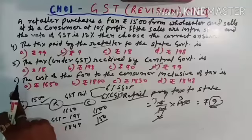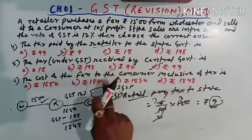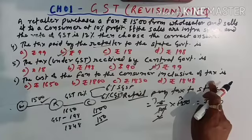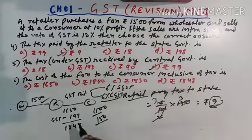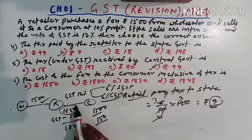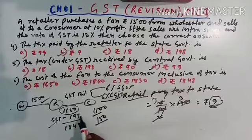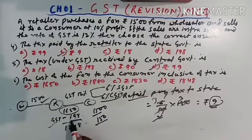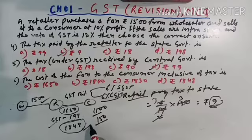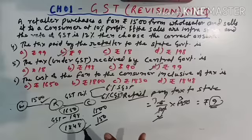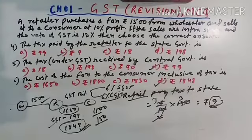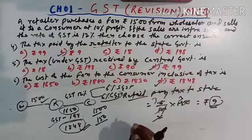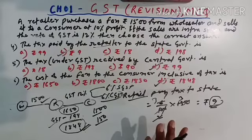Now the next question number six, the cost of fan to the consumer inclusive tax, that means for what amount the consumer is purchasing the fan. So total cost of fan was Rs. 1650 and the total GST was 198, when you add these two, you will get 1848, this is the amount, the actual amount, which a consumer is going to pay for the fan to the retailer. So the option will be D number. This is the way how to solve MCQ.